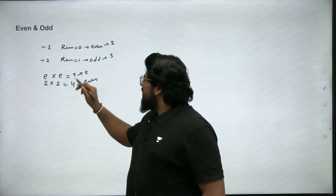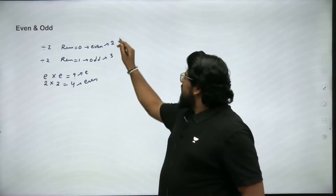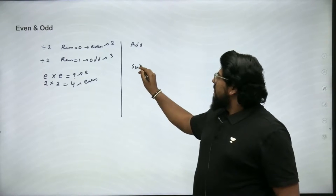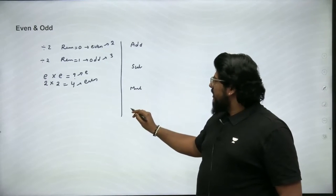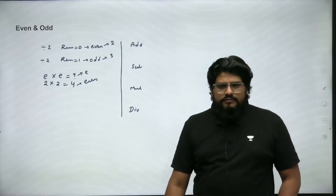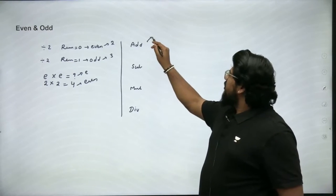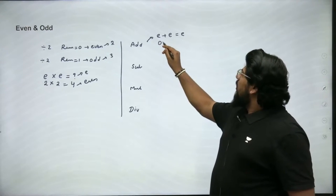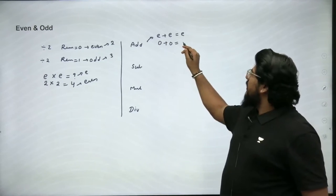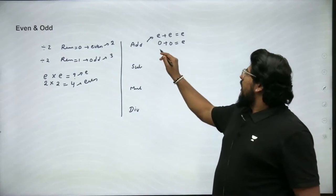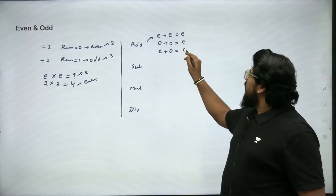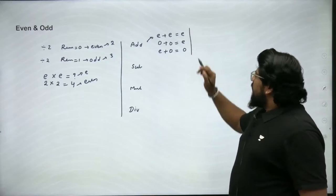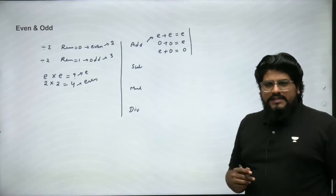Likewise, let's see the basic properties of addition, subtraction, multiplication, and division. In addition: even + even leads to an even number (2 + 2 = 4); odd + odd leads to an even number (1 + 1 = 2); and even + odd leads to an odd number (1 + 2 = 3, which is odd).